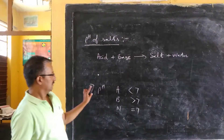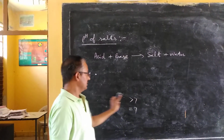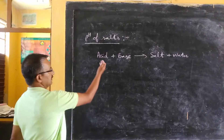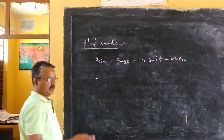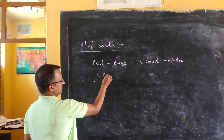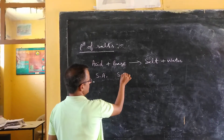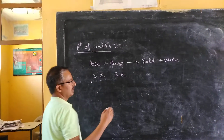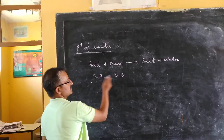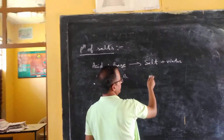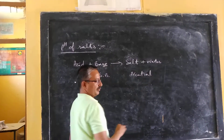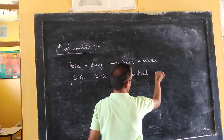Salt formation involves an acid and a base, so these can be of two types. If the acid is a strong acid and the base is also a strong base — both are strong — then the salt formed will be neutral, and there will be formation of a neutral solution.